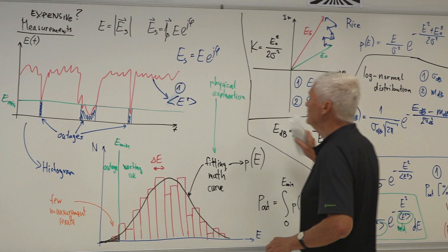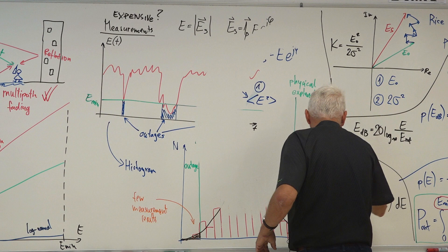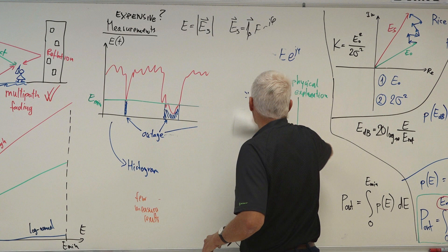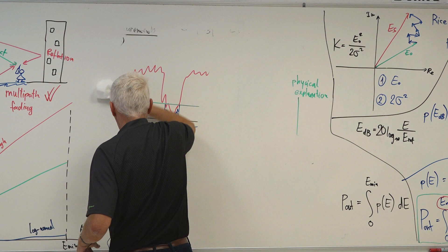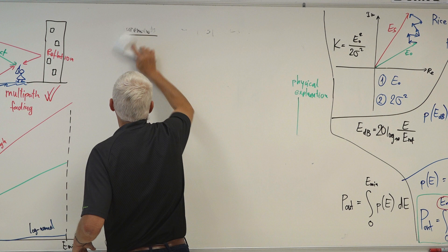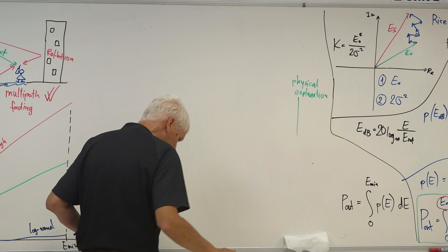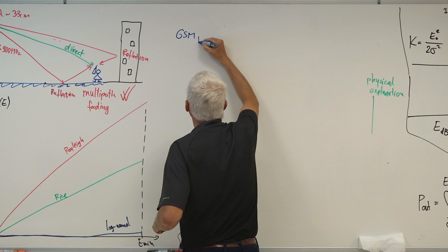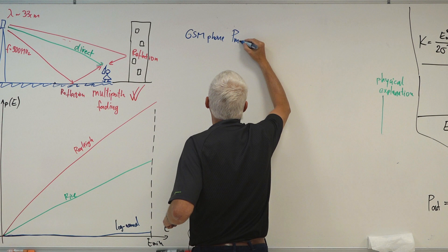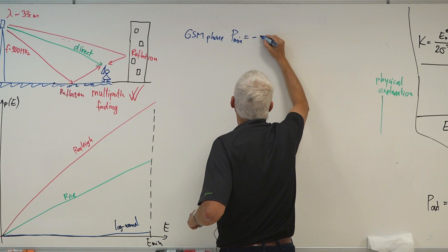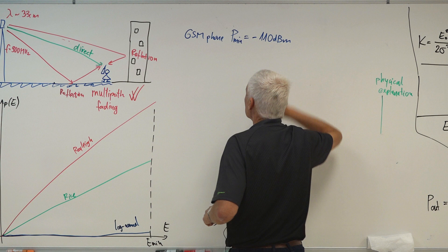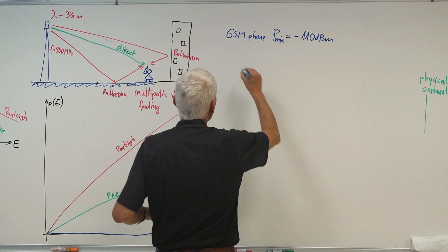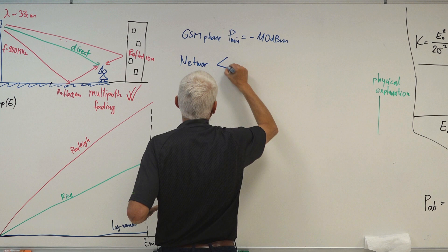Now let's make a practical example. The sensitivity of a GSM phone may give us a minimum power of −110 dBm, and our network gives us an average power of −90 dBm. The question is: what is the probability of outage of this link?